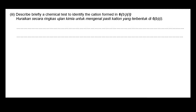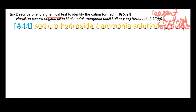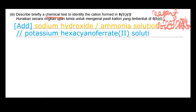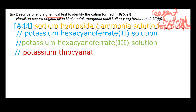Next, describe briefly a chemical test to identify the cation formed in 6B1. The cation formed is iron(III) ion. Whenever you describe a chemical test, you must include the reagent, method, and observation. You can add sodium hydroxide or ammonia solution; potassium hexacyanoferrate(II) solution; potassium hexacyanoferrate(III) solution; or potassium thiocyanate solution — five different solutions to identify iron(III) ion.